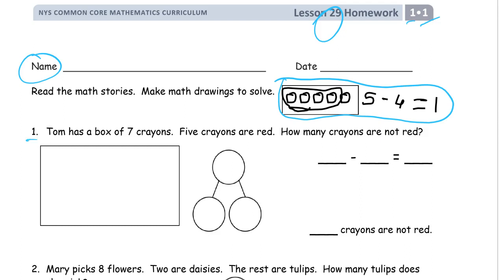So our first one, Tom has a box of seven crayons, five crayons are red. He has a box of seven, five are red, how many are not red? All you need is seven things. They don't have to look like crayons. They just have to be pictures of things you can count. If you make tiny dots, you're not going to be able to count them for sure.